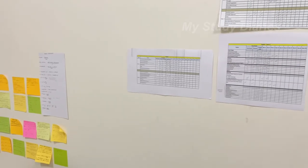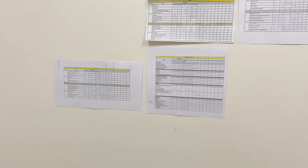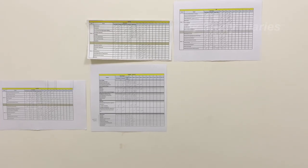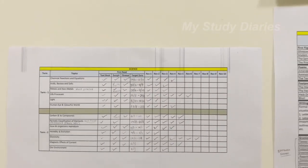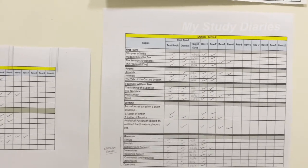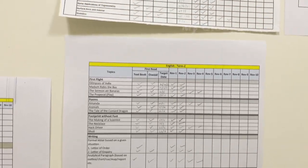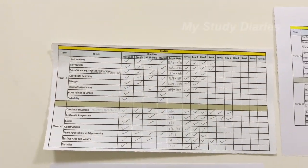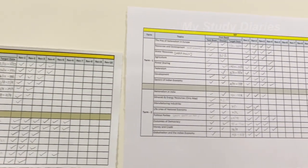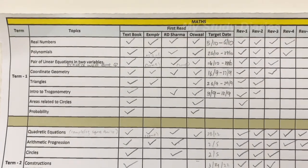Hey guys, in this video I'll be showing you how I prepared for my board exam. A few months before term one, I prepared this Excel sheet tracking my progress which was very systematic, and you can customize it according to your needs. For example, you can add columns like textbook, exemplar, RD Sharma, or any kind of book you wanted to solve.